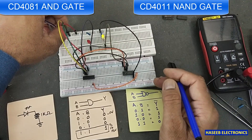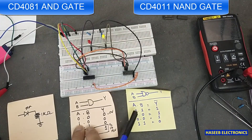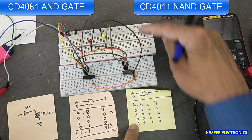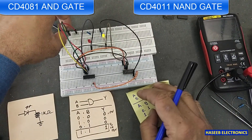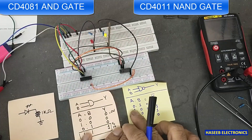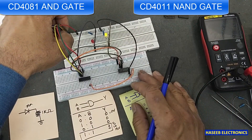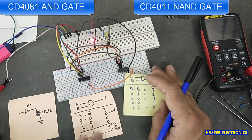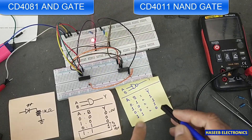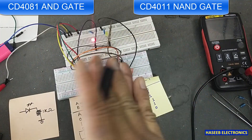If I connect one input to high — A is high, B is low — the AND output is low but the NAND output is high. If I connect the second to high and first to low — A low, B high — the AND output is low. Now if I connect both inputs to the positive side, both inputs are high: the AND IC has high output but the NAND IC is giving low output. They are providing opposite functions.